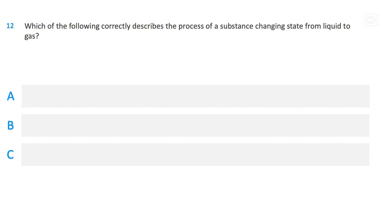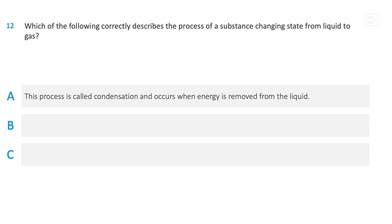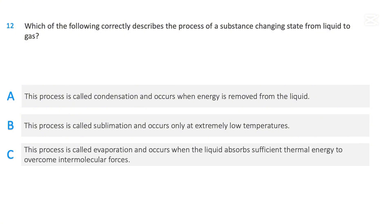Which of the following correctly describes the process of a substance changing state from liquid to gas? This process is called condensation and occurs when energy is removed from the liquid. This process is called sublimation and occurs only at extremely low temperatures. This process is called evaporation and occurs when the liquid absorbs sufficient thermal energy to overcome intermolecular forces. The correct answer is evaporation.